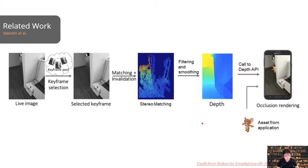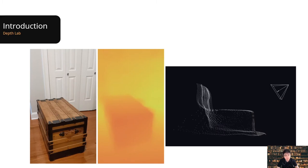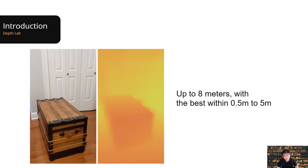The depth image is matched for every camera image processed by ARCore at 30Hz, and an application can acquire the latest depth image for the current frame. For more details, please check out our SIGGRAPH Asia 2018 paper, Depth from Motion for Smartphone AR. Currently, our Depth16 image format allows for depth sensing up to 8 meters, with the best depth measurements between 0.5 and 5 meters.